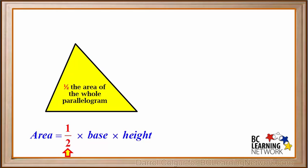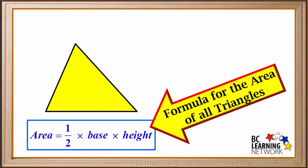Therefore, we can say that the area of the yellow triangle is one half of the base times the height. This formula is used to find the area of all triangles. The area of a triangle is a half times the base times the height.